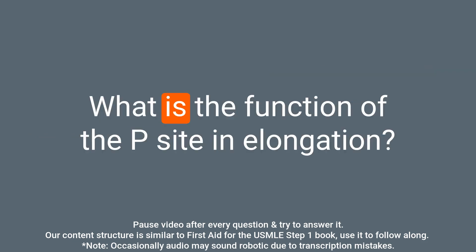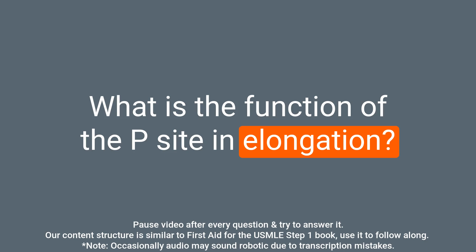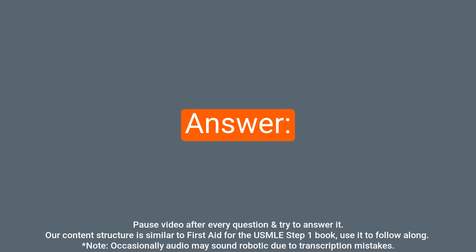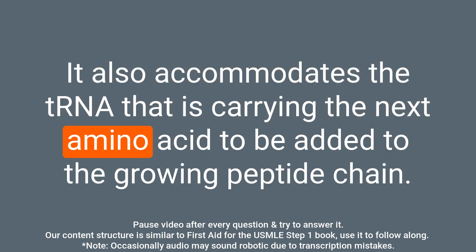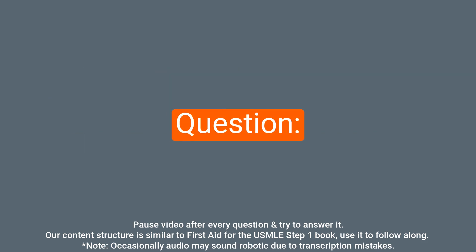Question: What is the function of the P site in elongation? Answer: The P site in elongation is where the growing peptide is located. It also accommodates the tRNA that is carrying the amino acid to be added to the growing peptide chain.